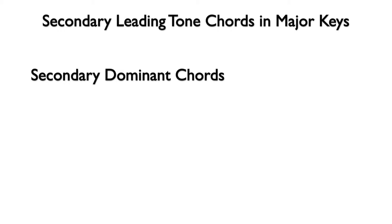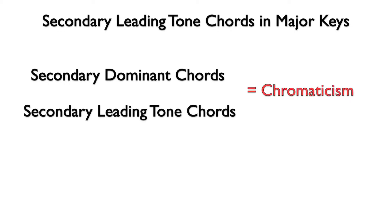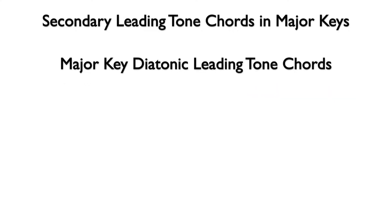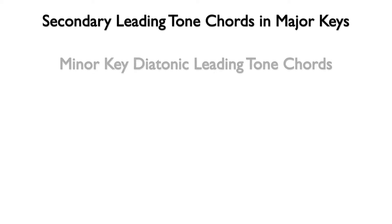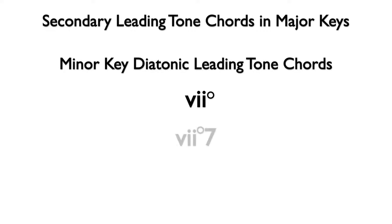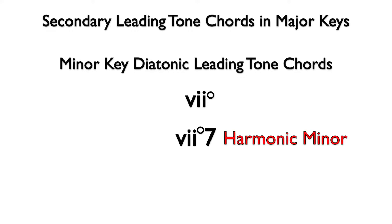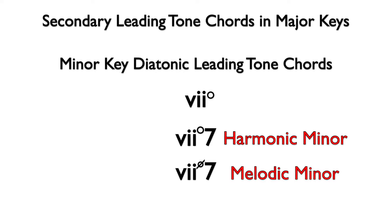Like secondary dominants, secondary leading tone chords function within a key while providing chromaticism. In a major key, the diatonic leading tone chords are the seven diminished triad and the seven half-diminished seventh chord. In a minor key, the diatonic leading tone chords are the seven diminished triad and the seven fully diminished seventh chord. The seven fully diminished seventh chord is diatonic to the harmonic minor scale. It is possible to have a seven half-diminished seventh chord in minor derived from the melodic minor scale, but this is not typical.